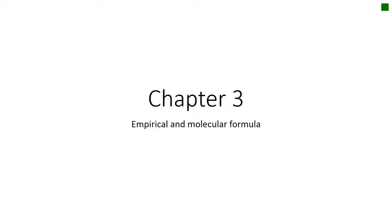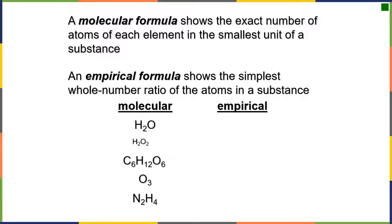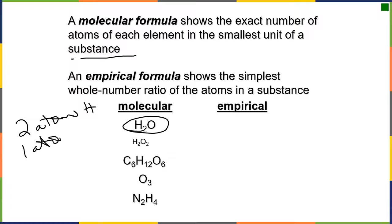Continuing in chapter 3, let's look at empirical and molecular formulas. A molecular formula shows the exact number of atoms in each of the smallest unit of the substance. For example, H₂O means we have two atoms of hydrogen for every one atom of oxygen. An empirical formula, instead of being the actual number, is the simplest whole number ratio.